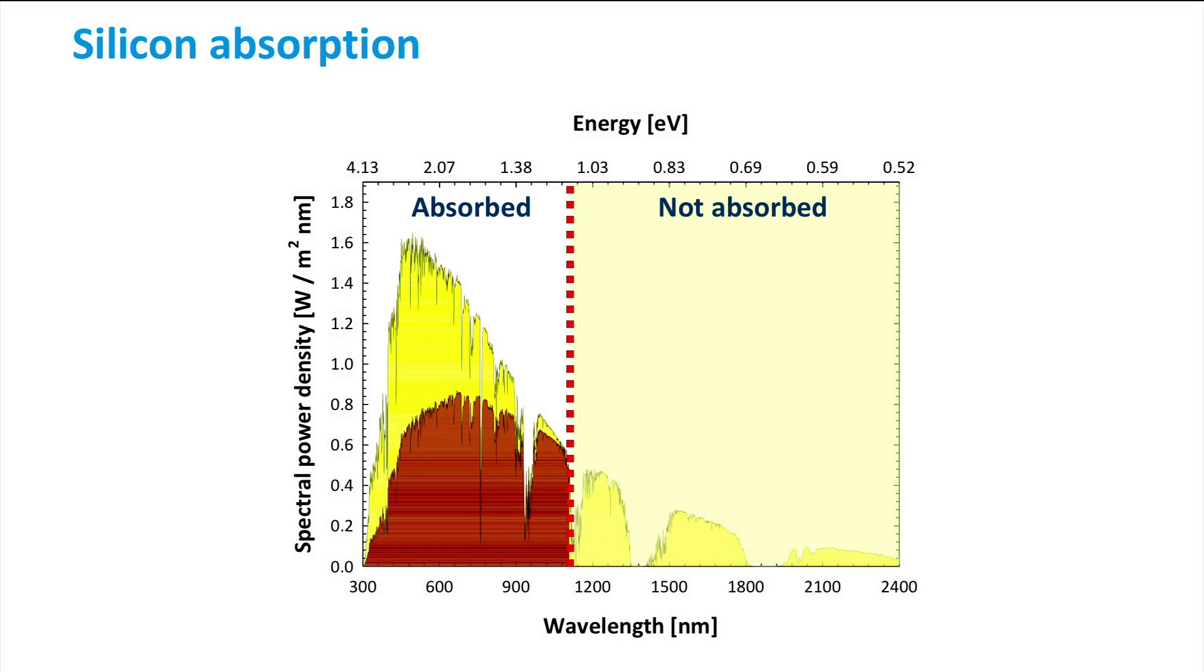You may also notice that not all of the available energy in this part of the spectrum is used for generating electricity by a solar cell. This is due to a process known as thermalization. And you will learn more about this in the light management section of the course.